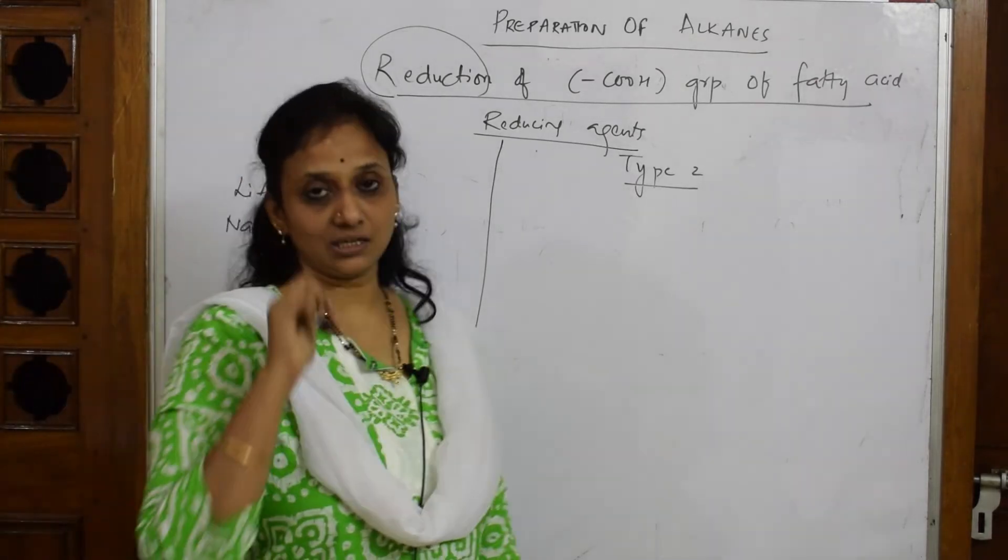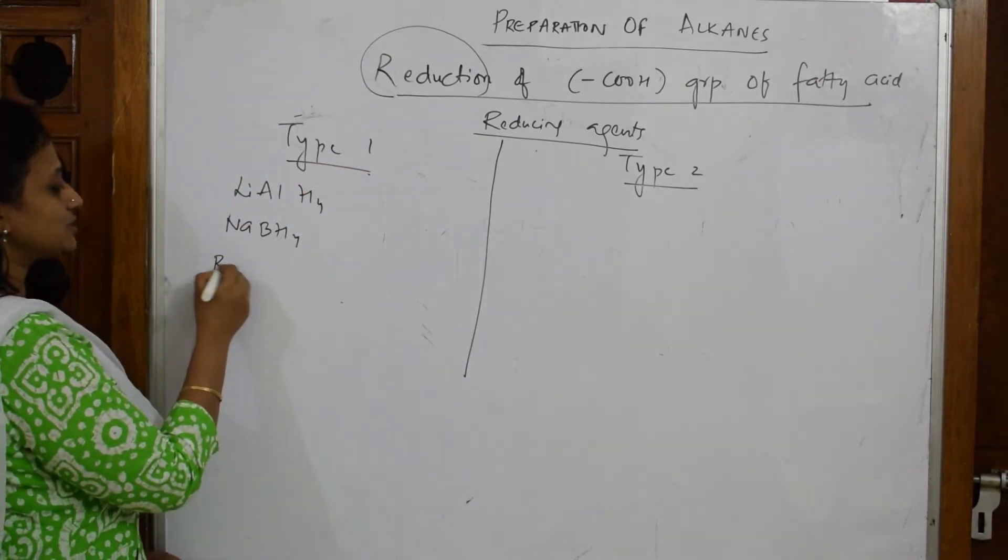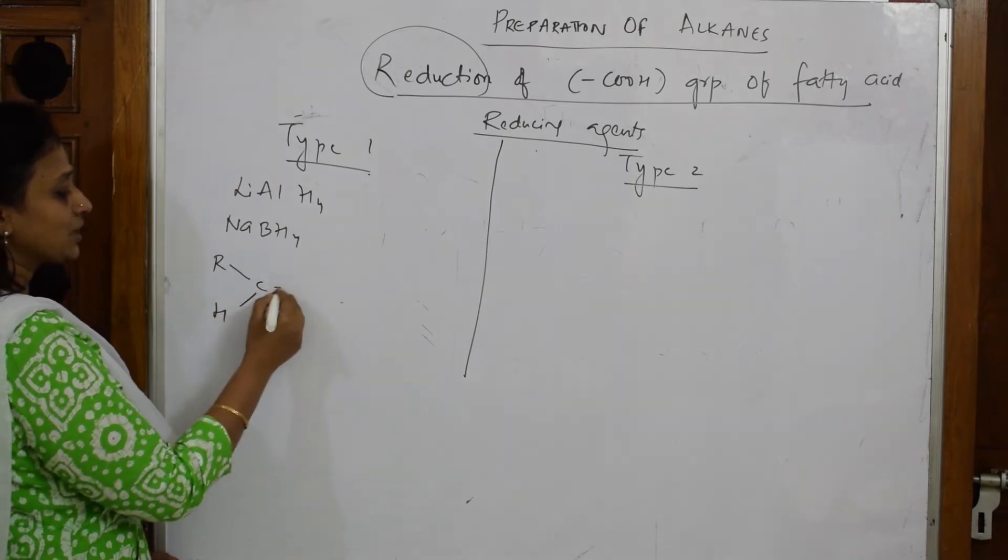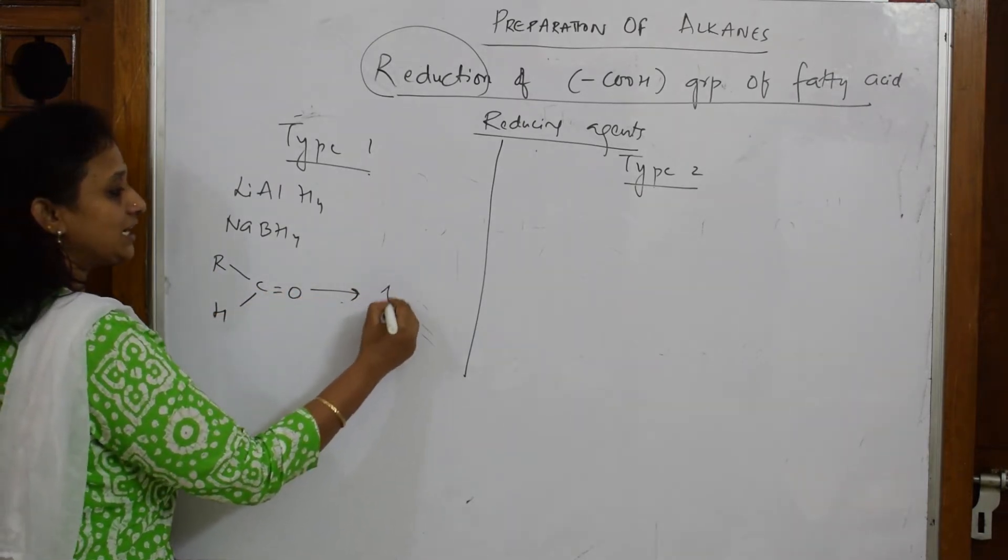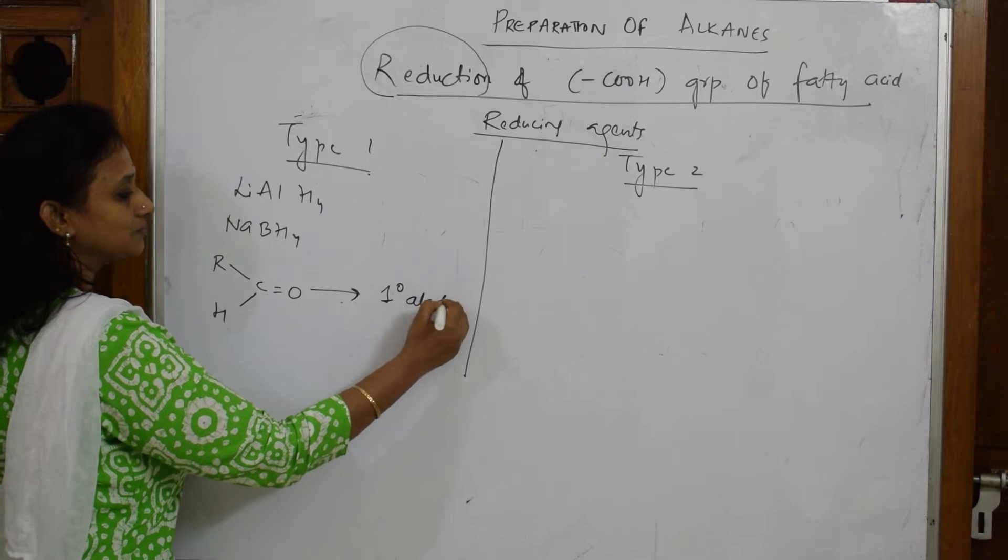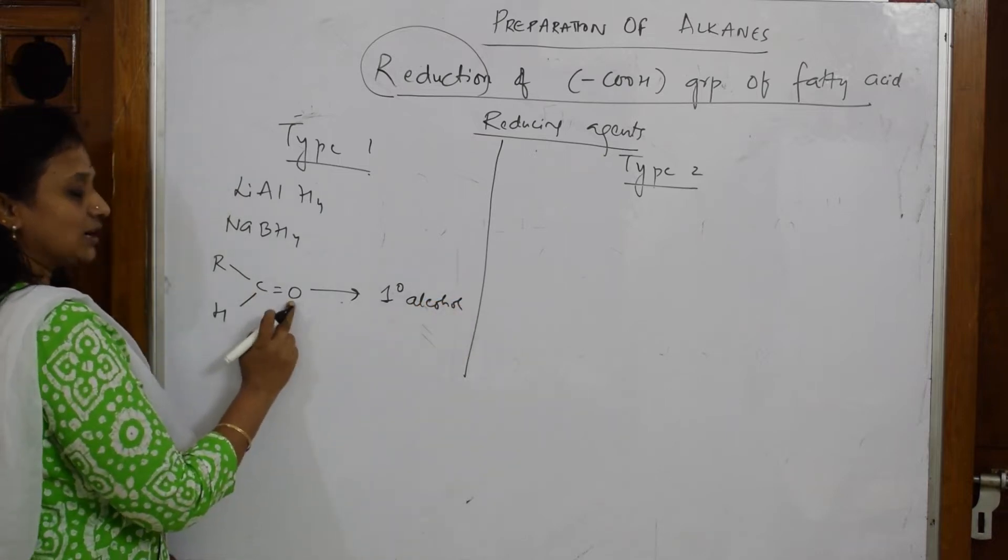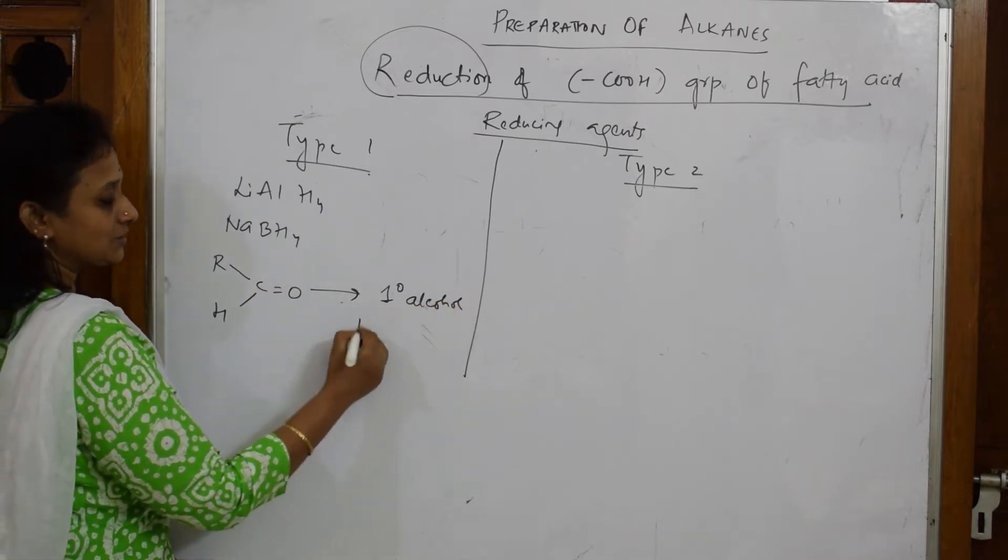What do they do? Basically type 1 category reducing agents are going to always reduce aldehydes. Suppose if I take an aldehyde like this, they are going to reduce aldehyde into primary alcohol.